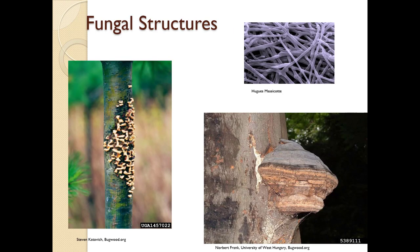Hyphae are branching filaments that make up the mycelium of the fungus - they absorb nutrients from the environment and transport them to other parts of the fungal body. On the left here we have white pine blister rust; these are signs - the fruiting bodies. On the right there is a conch, which is also a sign indicating disease in the inner portion of the trunk, meaning those trees are likely already dead or dying.